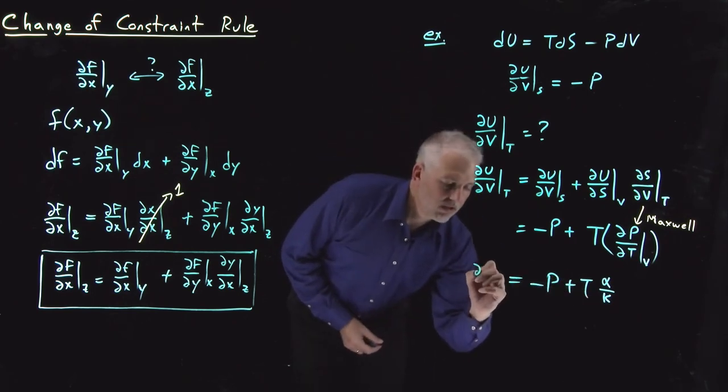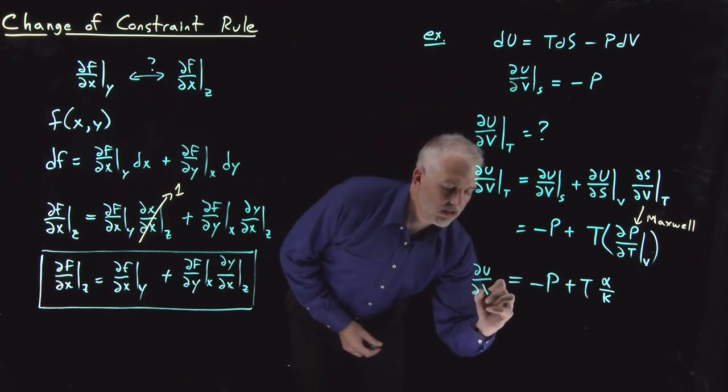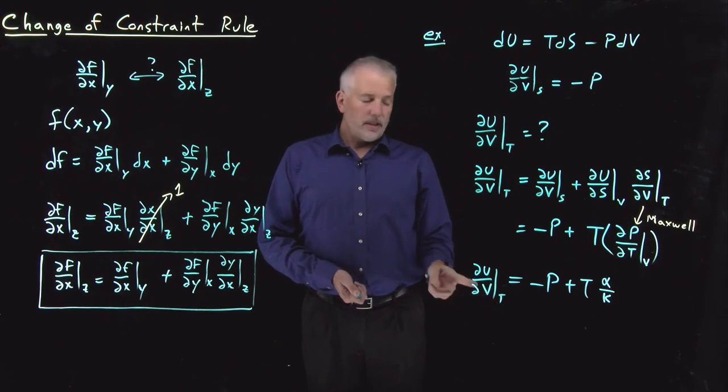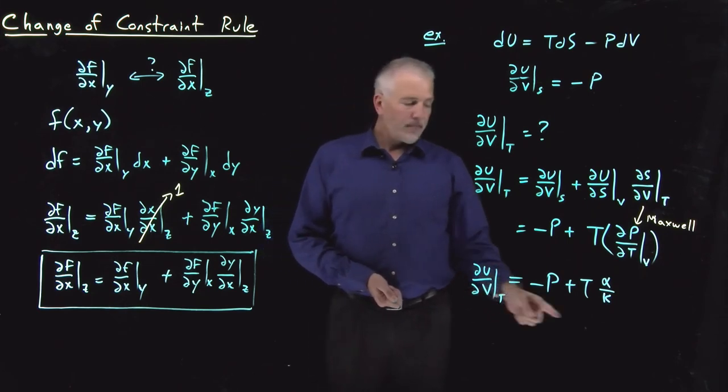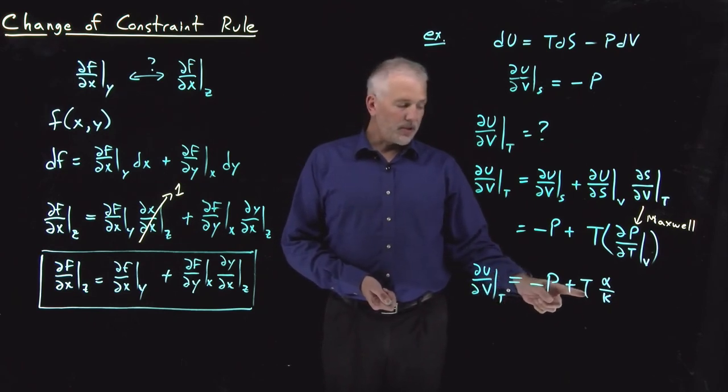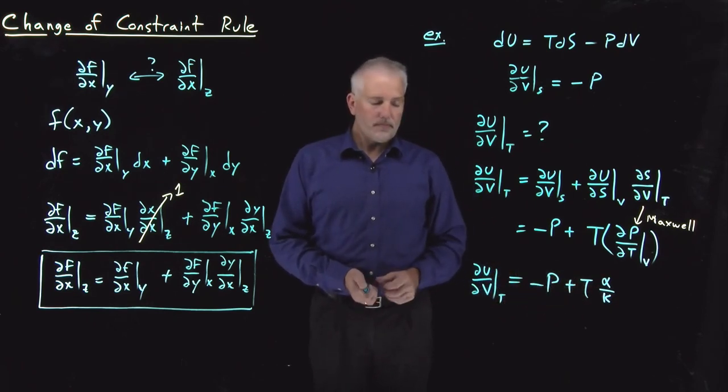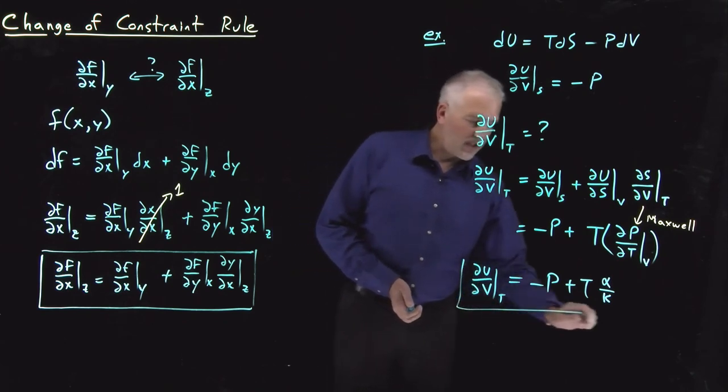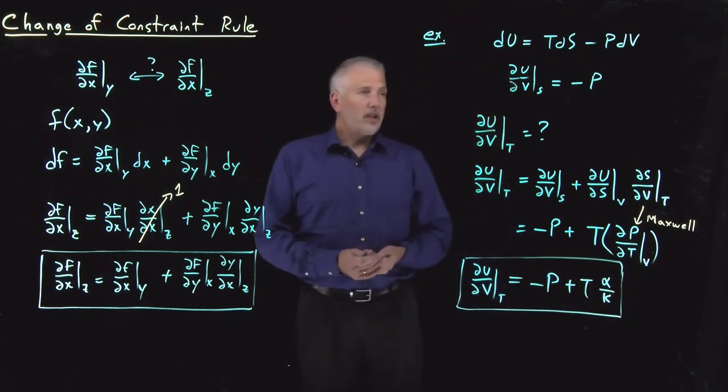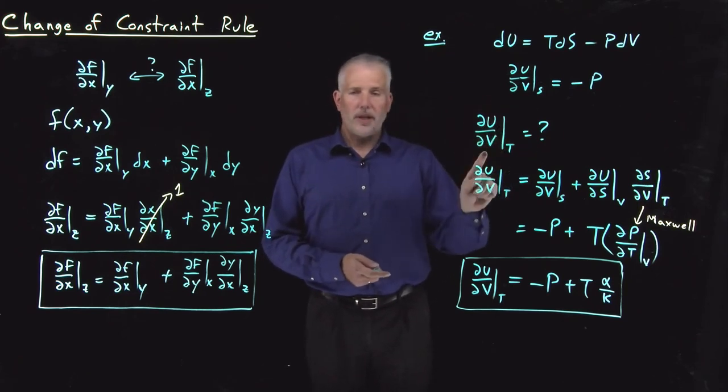So now what we've discovered is when something changes in volume isothermally, its internal energy changes at this rate, whatever the pressure is, negative pressure plus the temperature times alpha over kappa. So that's a very typical example of the type of thing we often do when we discover that we're interested in a particular thermodynamic relationship.